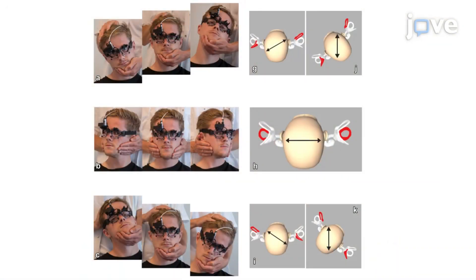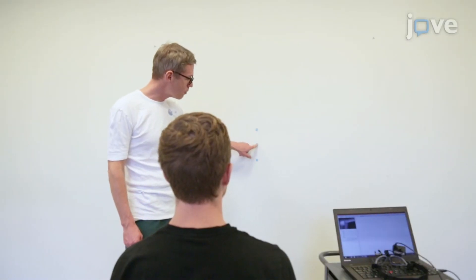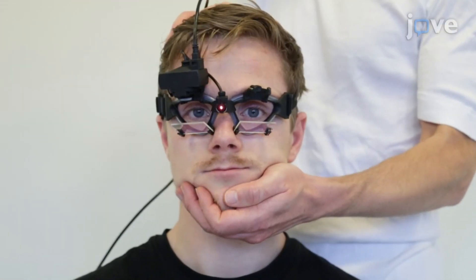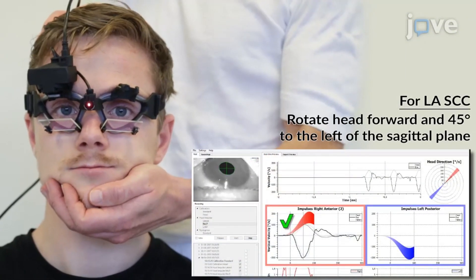Use the 3D VHIT test method for examination with System A by first positioning the participant in front of the wall at the desired distance. Ask the patient to remain in this position throughout the entire test. For the right anterior SCC, rotate the head forward and 45 degrees to the right of the sagittal plane.